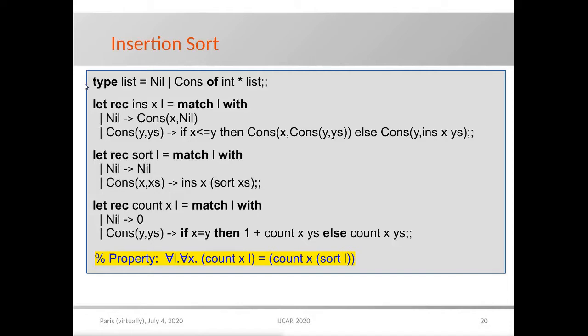The function INS inserts an element X in a list L just before the first element Y that is greater than or equal to X. The function SORT recursively applies INS. We want to prove that the multiset of elements of the input list is preserved by the SORT function. Thus, we define the COUNT function that counts the number of occurrences of a given element, and we prove that for all lists L and integers X, COUNT of X L is equal to COUNT of X SORT of L.